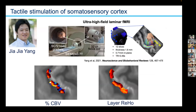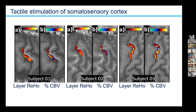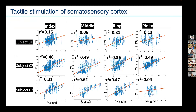Next, we were curious about how this homogeneity can capture activity. For this purpose, data acquired by Professor Young was used, where four fingers are stimulated. On the left, you see percent CBV change, where you can appreciate a line of activity within cortical gray matter. On the right is the layer ReHo — they look quite aligned. We checked other subjects as well: the ReHo and CBV values are pretty in line. The correlation between percent CBV change and ReHo values is mostly region-dependent, but shows pretty good alignment.